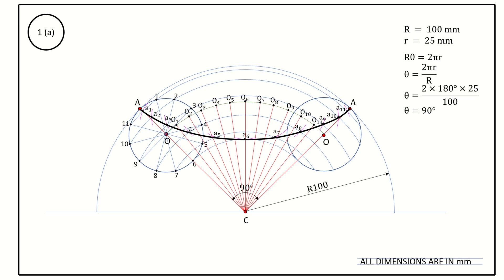The second part of the question is to draw the normal and tangent to any point on the curve. Mark a point P on the curve. Take a compass with center point P and radius 25 mm; cut an arc on the center arc line and mark that point as E. Join C and E with a straight line and extend it to the bigger radius arc — mark that point as N. Join N and P; this line NP is the normal. Draw a perpendicular to NP through P — this line is the tangent, marked as PM.